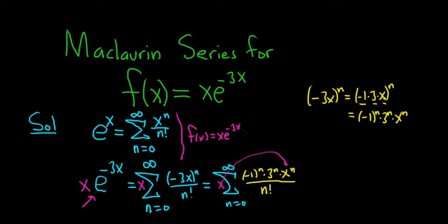So we end up with the infinite sum as n runs from 0 to infinity. We still have the (-1)^n. We still have the 3^n. And when you multiply these you're multiplying x times x^n. It's really x to the first power. And so what you do with the exponents is you add them. So this will be x^(n+1).